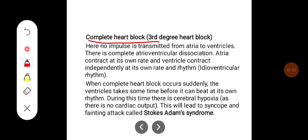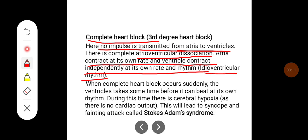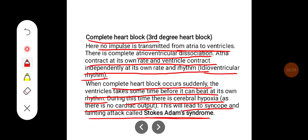Complete heart block: here no impulse is transmitted from atria to ventricles. There is complete atrioventricular dissociation. Atria contracts at its own rate and ventricle contracts independently at its own rate and rhythm. That is why it is called idioventricular rhythm. When complete heart block occurs suddenly, the ventricles take some time before it can beat at its own rhythm. During this time there is cerebral anoxia as there is no cardiac output. This will lead to syncope and fainting attack called Stokes-Adams syndrome.